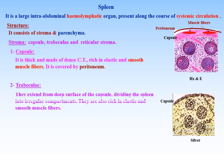Trabeculae. They extend from the deep surface of the capsule, dividing the spleen into irregular compartments. They are also rich in elastic fibers and smooth muscle fibers, like the capsule.